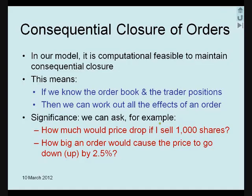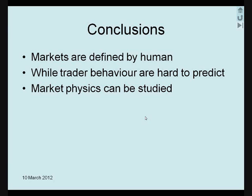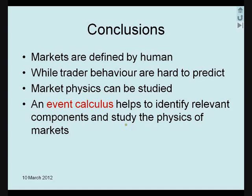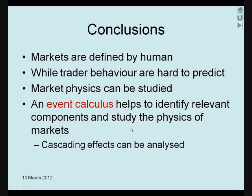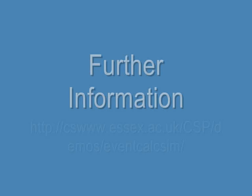To conclude, while trader behavior is hard to predict, market physics can be studied because the rules are human made. We have defined an event calculus to describe a market mechanism. We have shown that, by maintaining consequential closure, cascading effects due to margin calls can be analyzed. Event calculus enables us to study financial markets as a hard science, like physics or mathematics. It opens new paths to better understand financial markets.